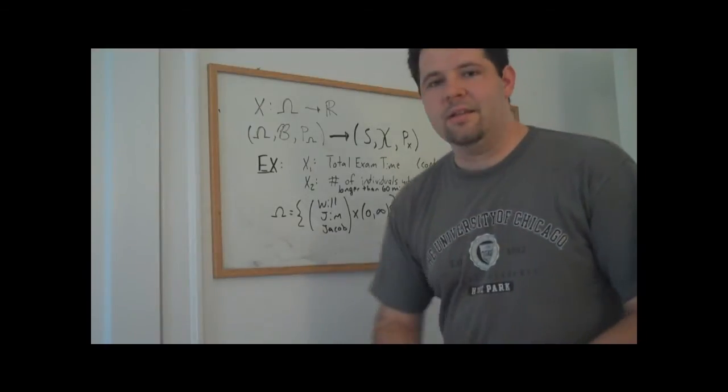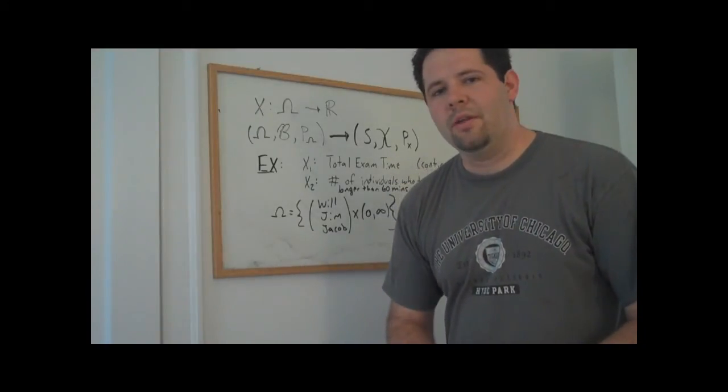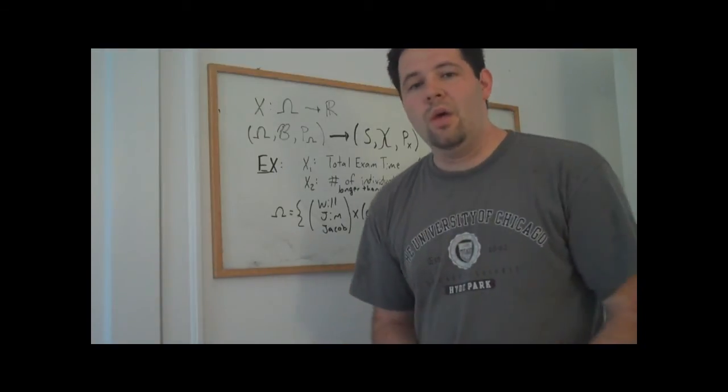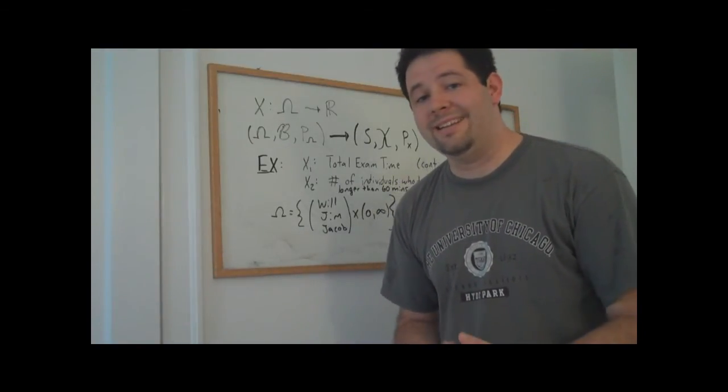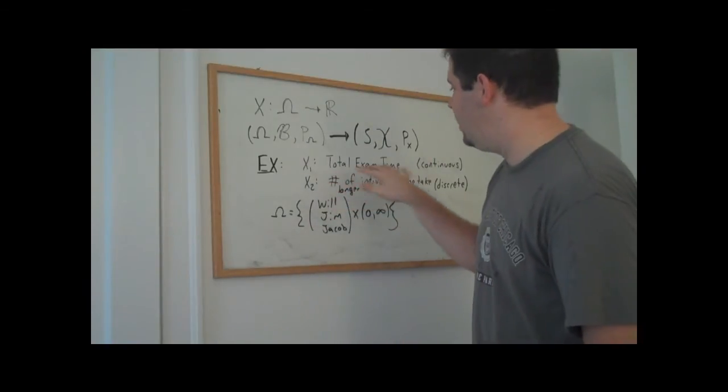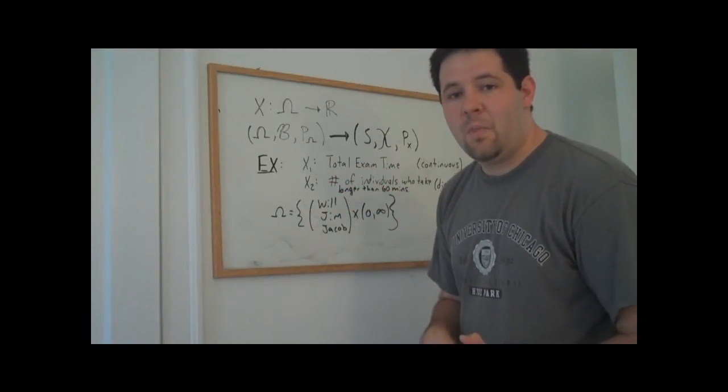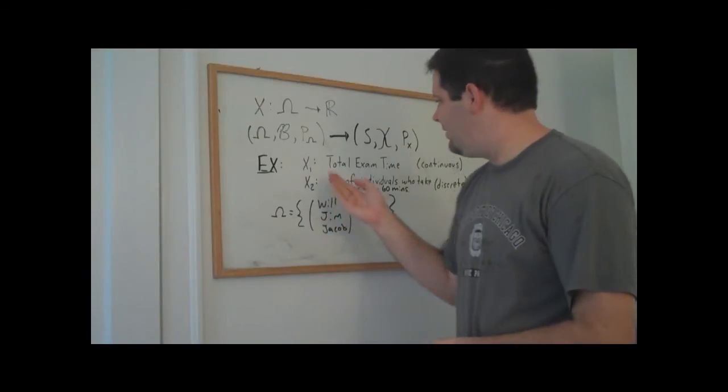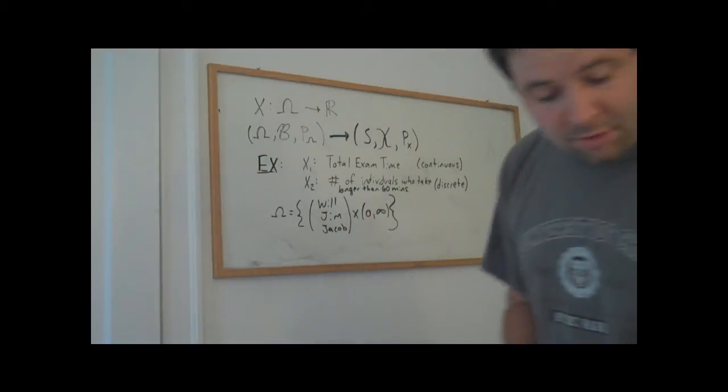And the next thing that we want to point out about this is that the distinction between continuous and discrete will have implications for how we describe what probabilities these random variables take on. So we'll discuss that a bit more in the next video, but in this video you can see a clear distinction between the two types of random variables.